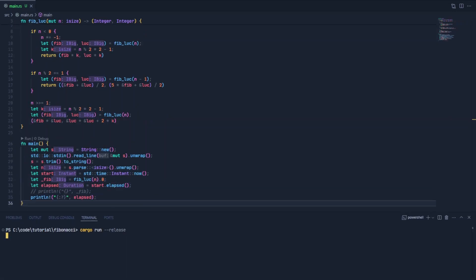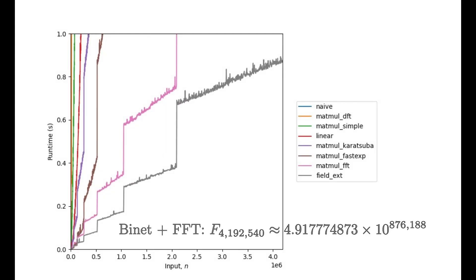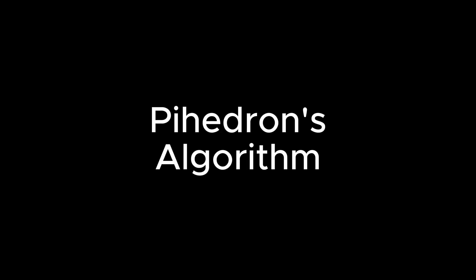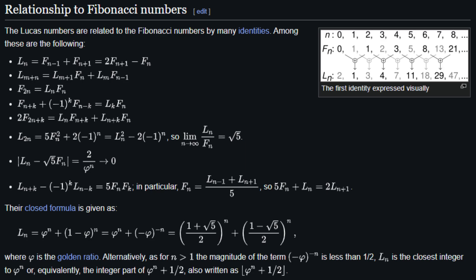After running our program, we can see that it takes less than a second to compute the 20 millionth Fibonacci number in just a few lines, beating the gold medalist of 4 million by a decent margin. I think we can all agree to call this Pihedron's algorithm, even though I just stole the formula off Wikipedia.